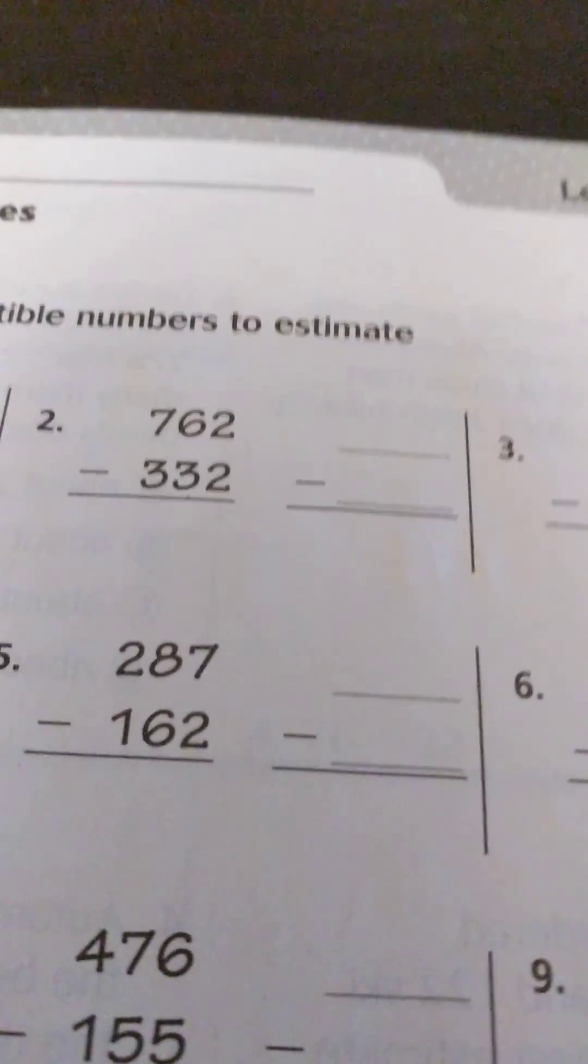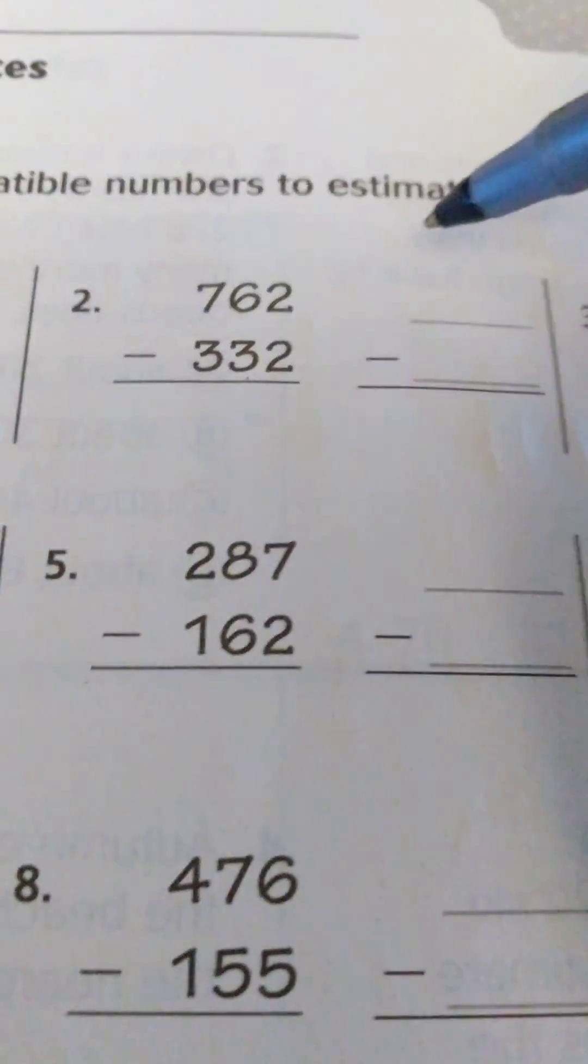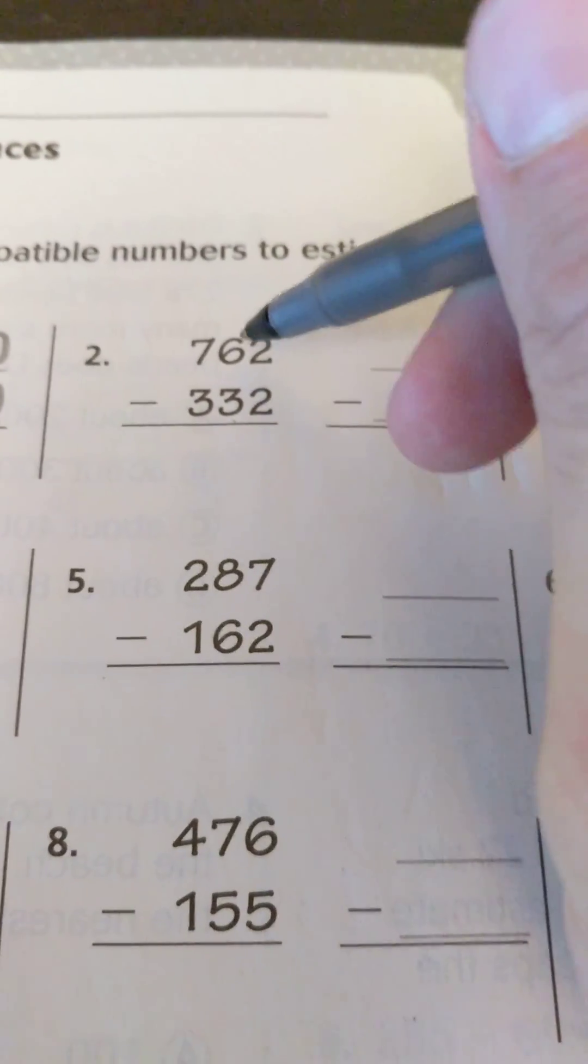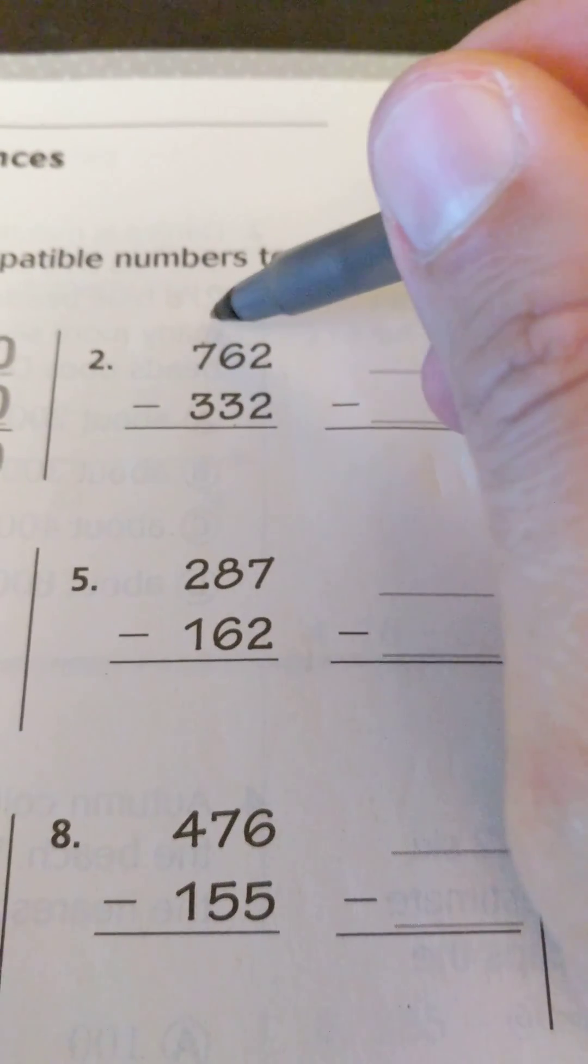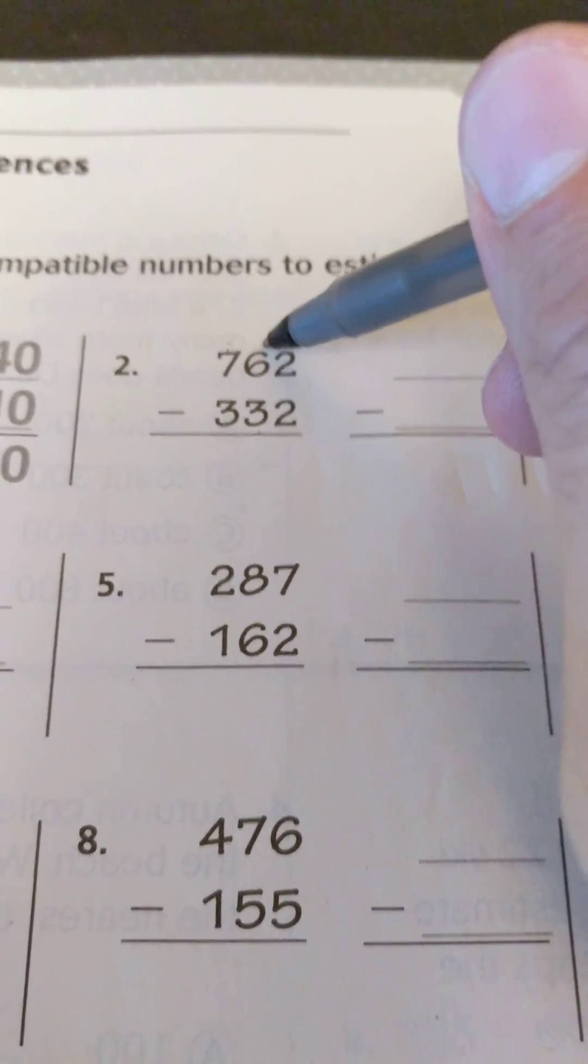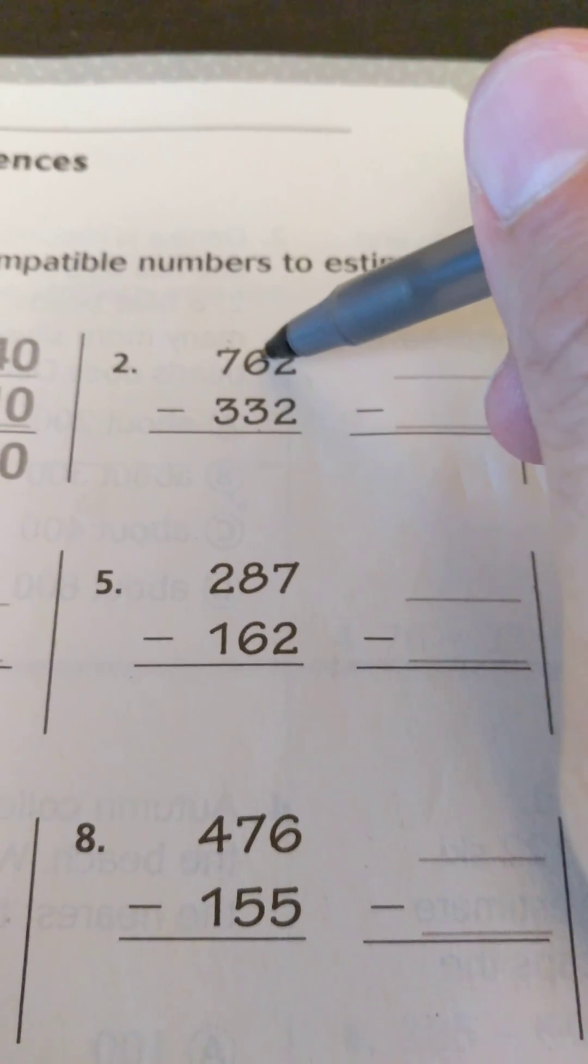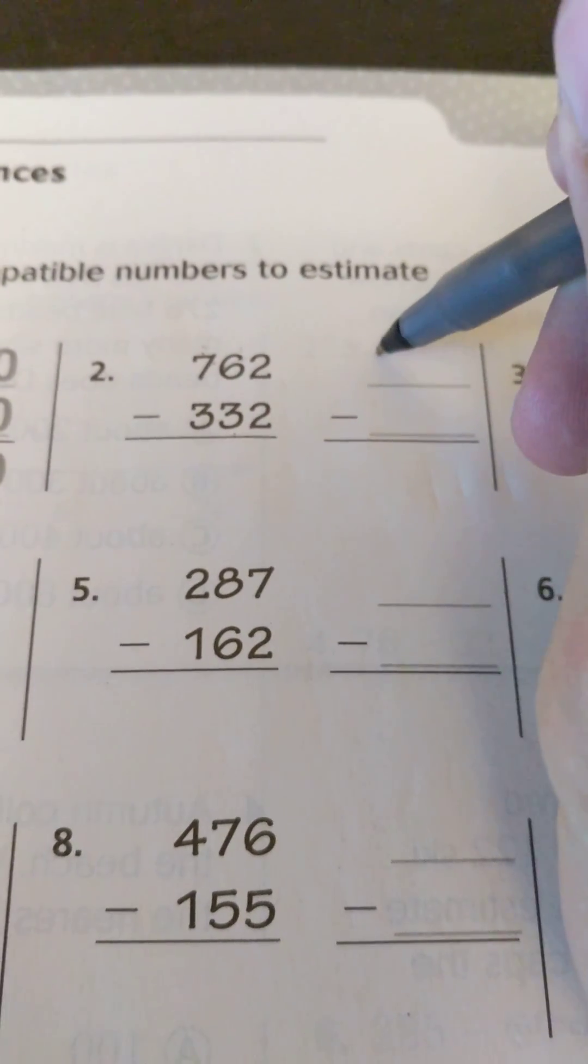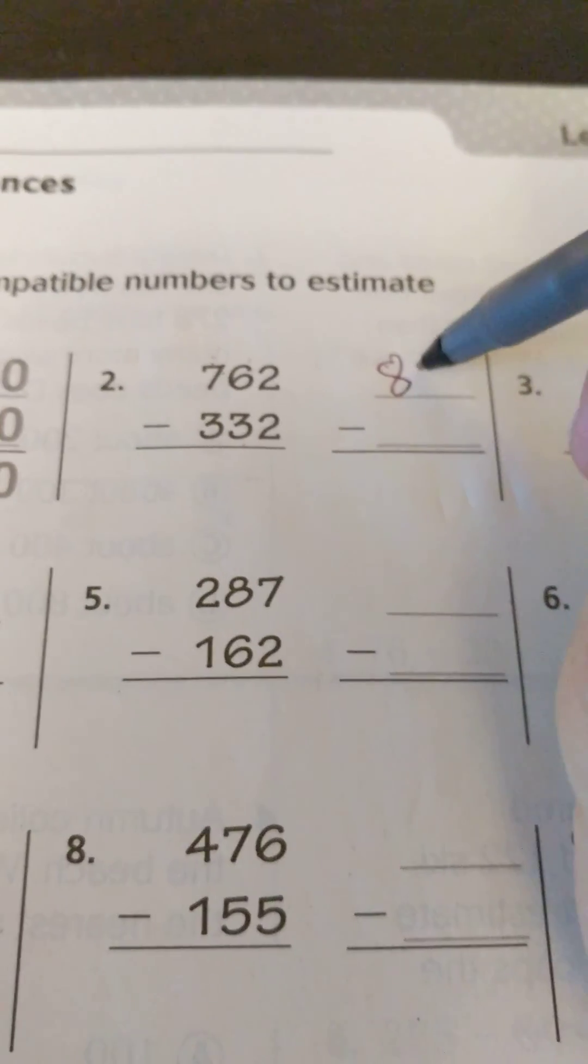Let me do another example over here. Now we have hundreds. So we're going to estimate to the nearest hundred here. If I round to the nearest hundred, I need to look next door to my tens. This number is five or larger, so I'm going to round up. So 762 is going to become 800.